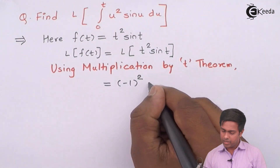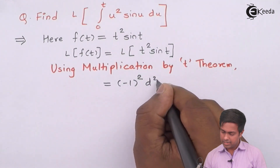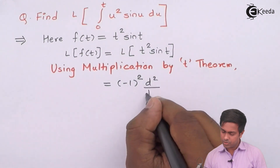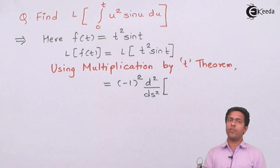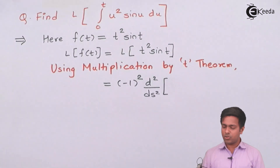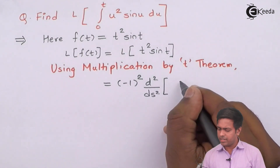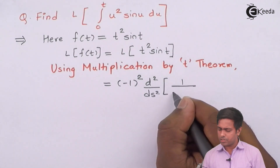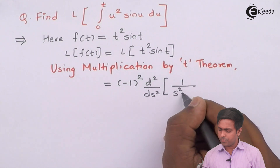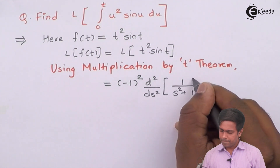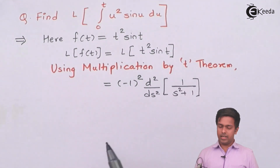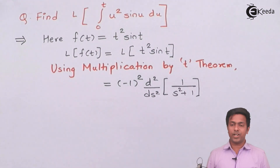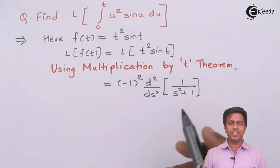Applying the multiplication by t theorem, the answer is (−1)² (d²/ds²) of φ(s), where φ(s) = L{sin(t)} = 1/(s² + 1). Now let's find the derivative of this function.